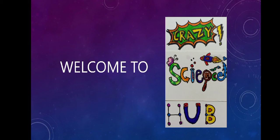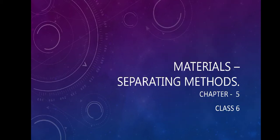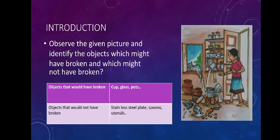Hello everyone, welcome to Crazy Science Hub. Today we are going to discuss Chapter 5 of Class 6, that is Materials Separating Methods. Let us go to the lesson.